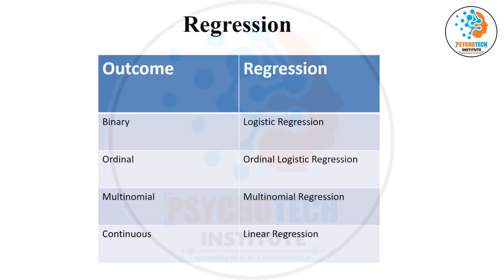If they put a scenario like: they want to see the relationship between variable X and Y, where X has two categories — which regression is appropriate? So your outcome is binary, which means logistic regression. Ordinal outcome like mild, moderate, severe — ordinal logistic regression. More than two categories, independent — multinomial regression. And if it is continuous, like BMI or hemoglobin as your outcome, then linear regression.